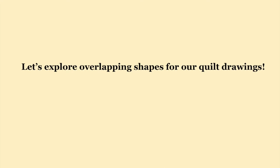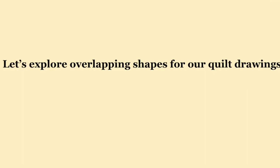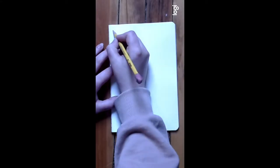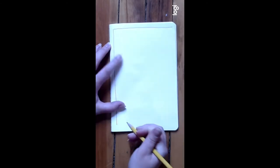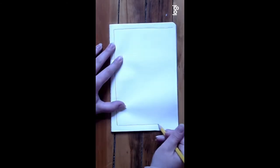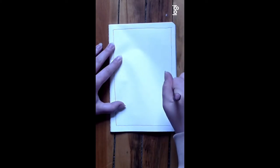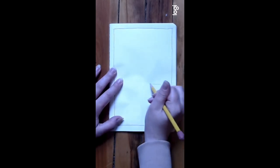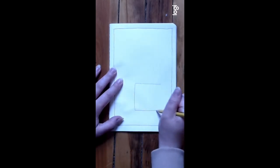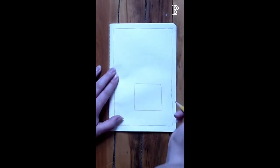Now let's explore how to overlap shapes for our quilt drawings. Your first step is to decide if you'd like to have a border around your quilt layout — if you do, creating that border is your first step. The next step is to draw one shape anywhere on your paper. This can be an organic shape or a geometric shape, but start with just one shape.